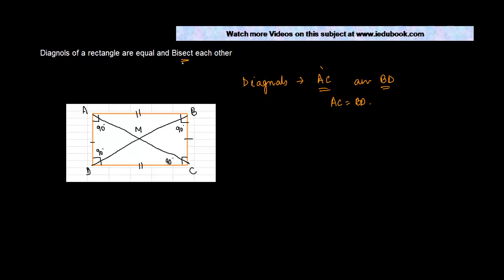I'll come back to 'bisect each other' later. To prove that AC is equal to BD, the only way is if AC and BD are parts of some triangles and we can prove those triangles are congruent. So let us consider triangle ADC and triangle BDC.